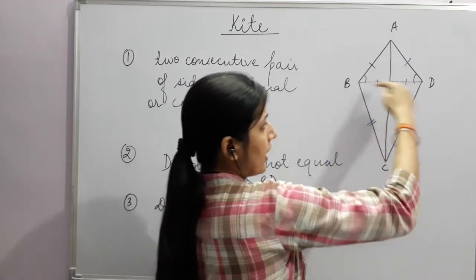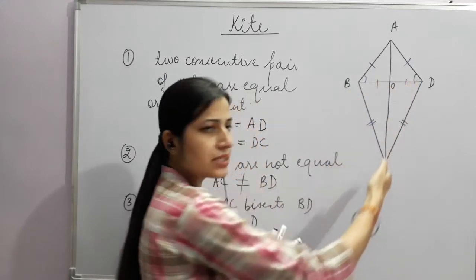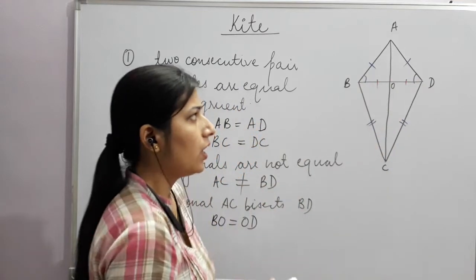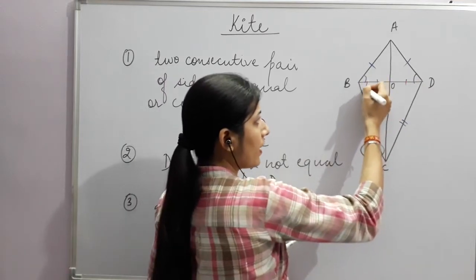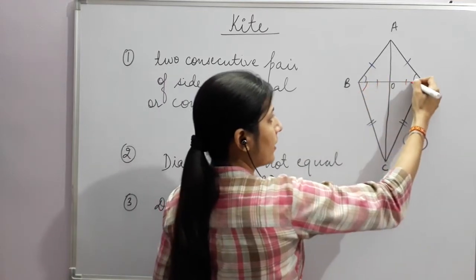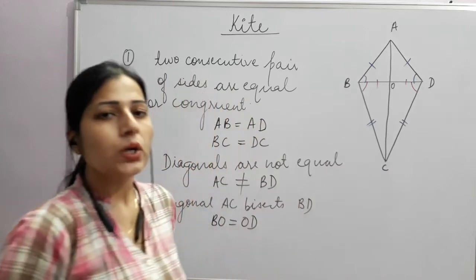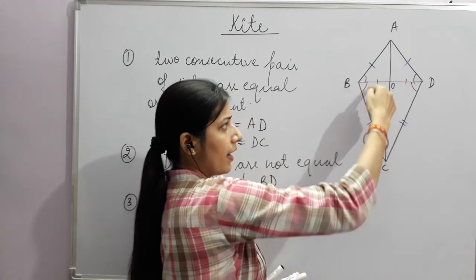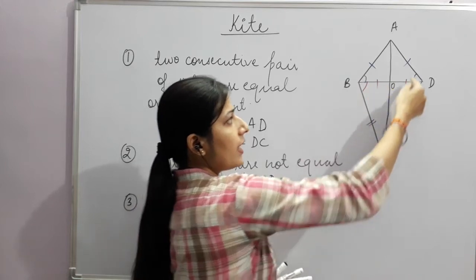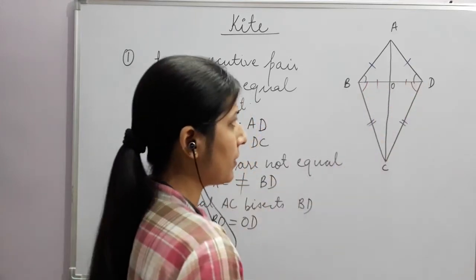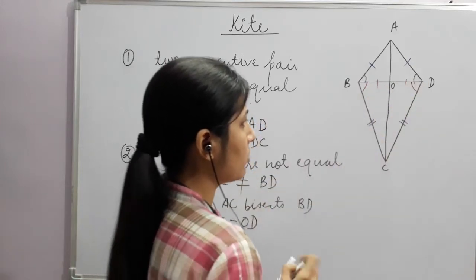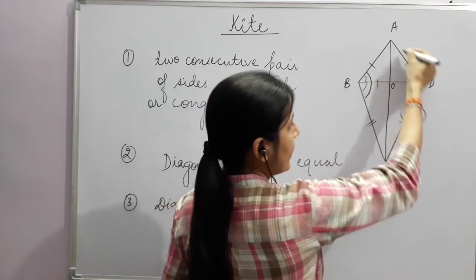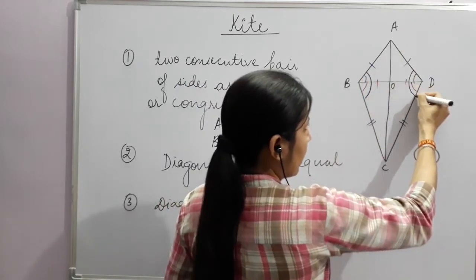This gives us one isosceles triangle where both sides are equal and the angles at the base are equal. So for triangle ABD, one set of angles are equal; and for triangle BCD, the corresponding angles are equal. This implies that angle ABC = angle ADC.